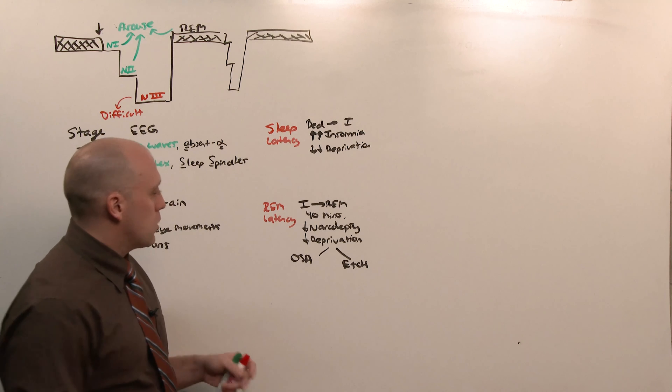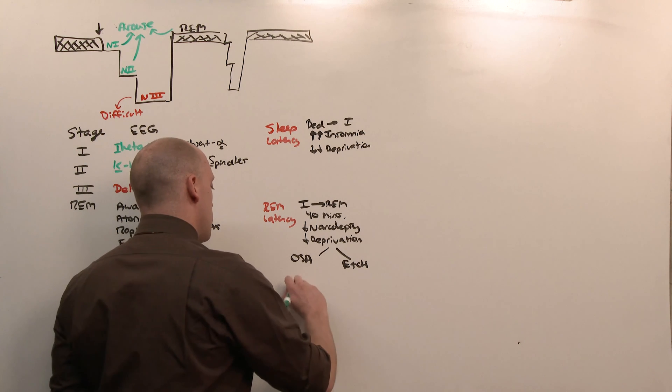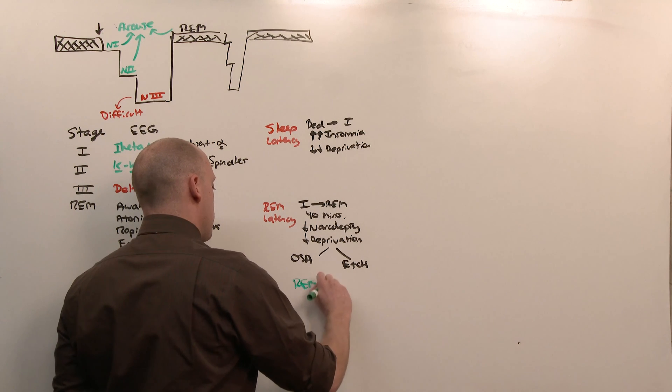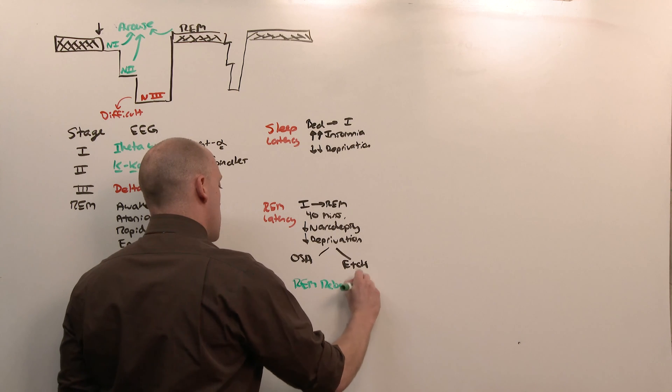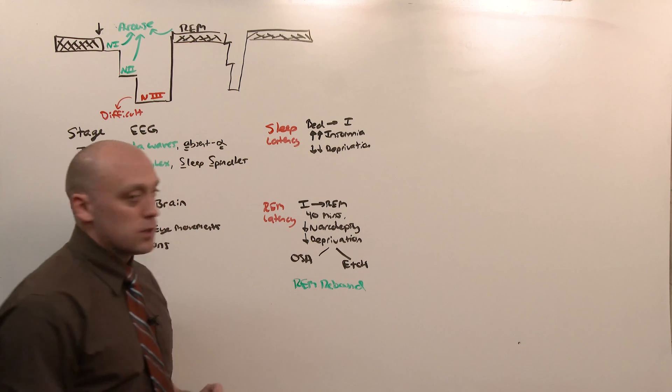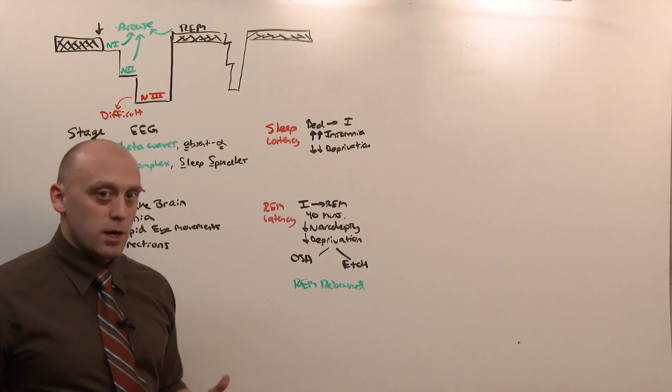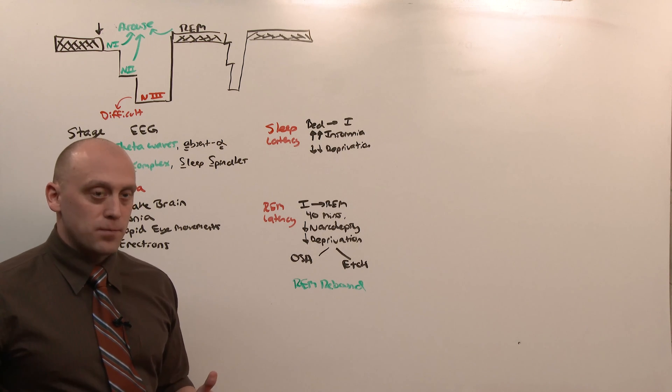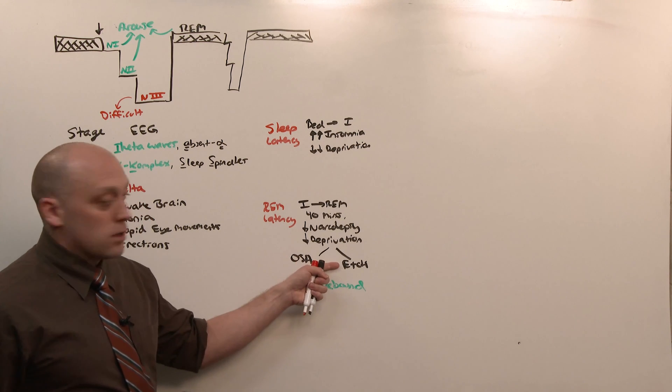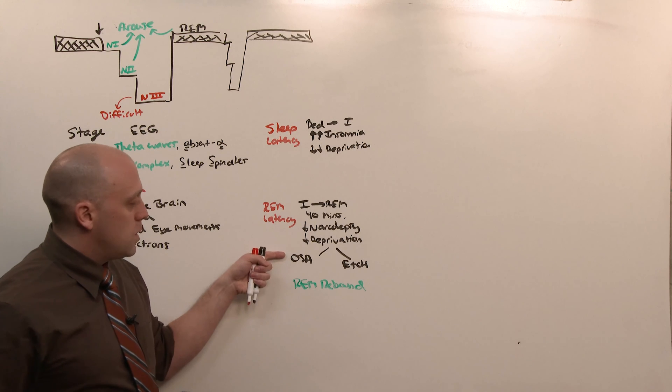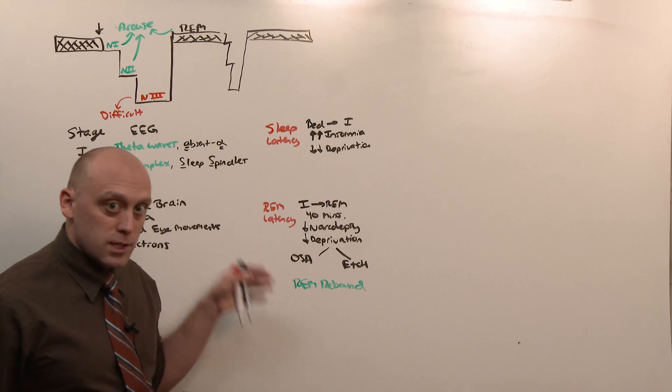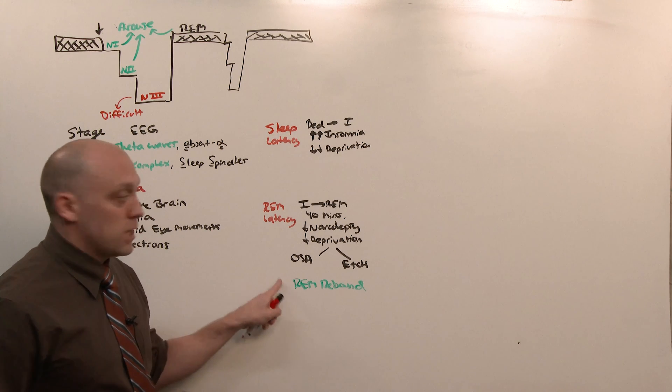And there's a phenomenon called REM rebound. The amount of REM you get significantly increases when you deprive the body from REM sleep. You start taking the alcohol away or you give them a CPAP machine. All of a sudden they're able to get into REM and they have REM rebound - they have a lot of it.